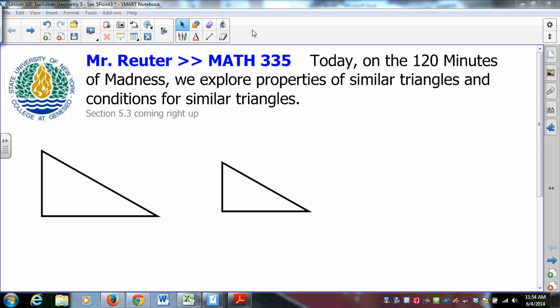All right, we march on into section 5.3. Section 5.3 deals with similarity, similar triangles in particular. So that's what we're going after. I have constructed two similar triangles here. We know that they are similar because let's go back to our definition of similarity.